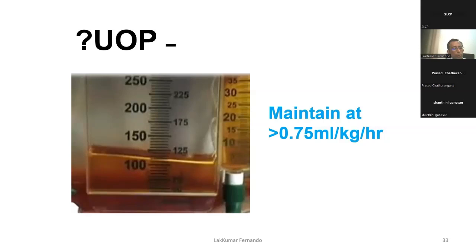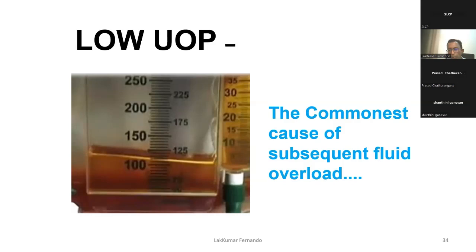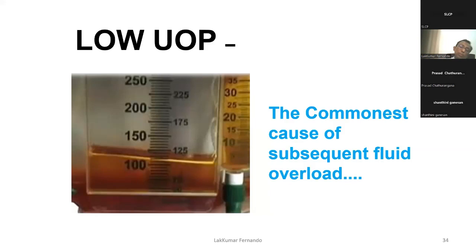The new guideline introduces a urine output target of 0.75 ml/kg/hour — previously we targeted 0.5 ml/kg/hour. Maintaining good urine output is very important. Low urine output is one of the commonest causes of fluid overload, because when all other parameters are acceptable but urine output is low, clinicians may over-correct. A very small dose of furosemide can be tried if you have confirmed that adequate fluid has been given on a time-volume basis.